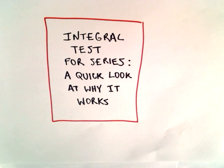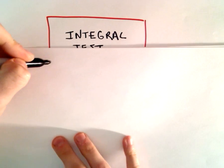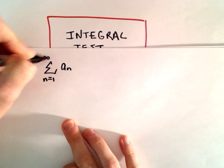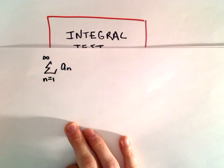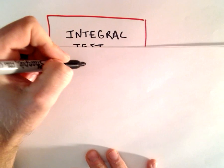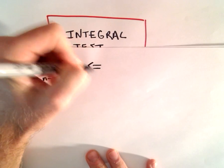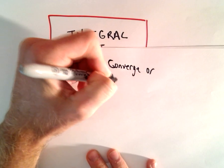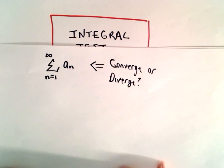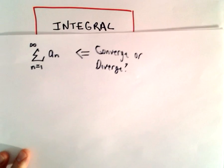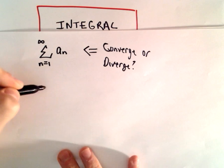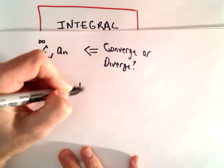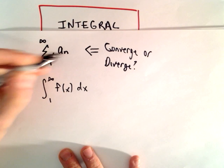So again, all the integral test for series really says — your series has to satisfy certain conditions. I'm going to start my series at n equals 1, though it could start at any number you want. And the question is: does this series converge or diverge? That's usually the question we ask ourselves with series.